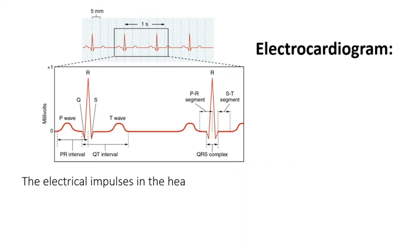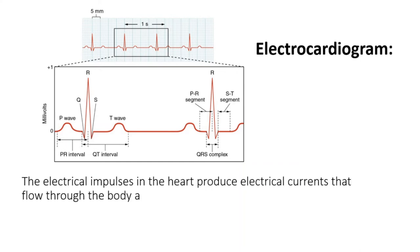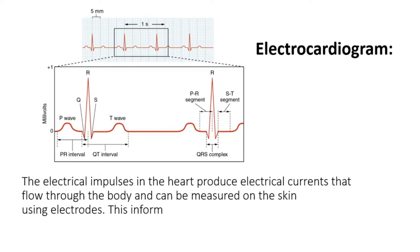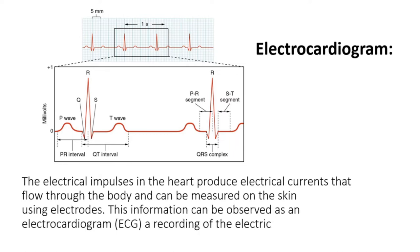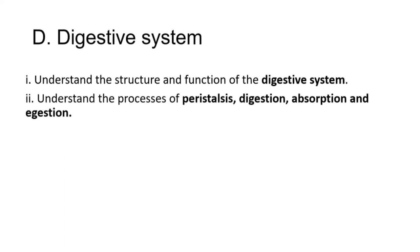Electrocardiogram. The electrical impulses in the heart produce electrical currents that flow through the body, and can be measured on the skin using electrodes. This information can be observed as an electrocardiogram, ECG, a recording of the electrical impulses of the cardiac muscle.